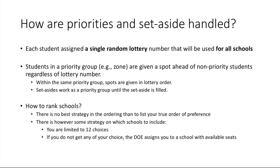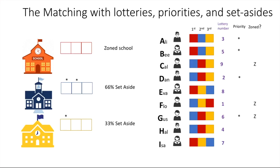If you don't get any of your choices, the Department of Education will assign you to a school that still has availability. So there might be some cases where you don't want to put only very selective schools, because you might run the risk of not being assigned to any school. So how does the matching work when we have lotteries, priorities, and set-asides? Here we have an example with three schools: red school, blue school, and yellow school. In this case they have three seats each. The red school is a zone school. The blue school has a set-aside for a priority group such as a diversity and admission set-aside for 66%, so two out of the three seats. And the yellow school has a set-aside for 33%, so one out of the three seats.